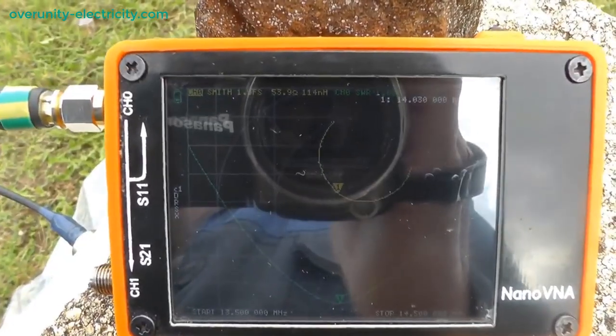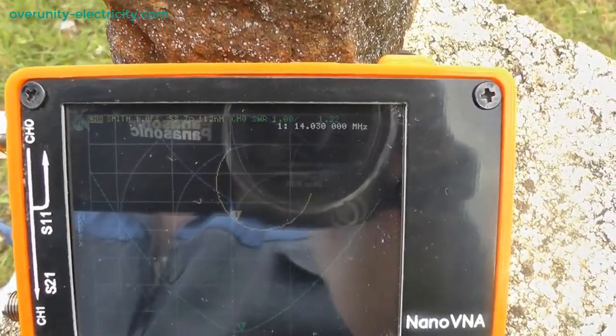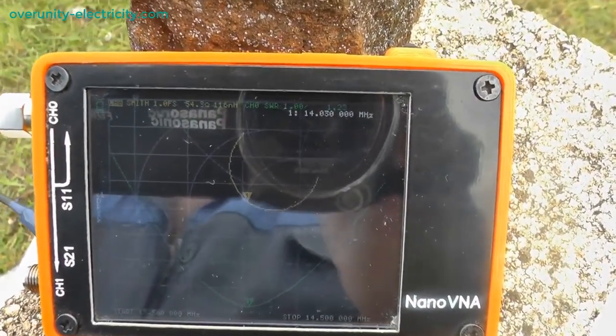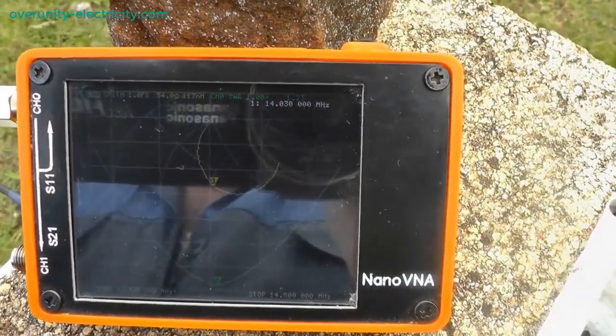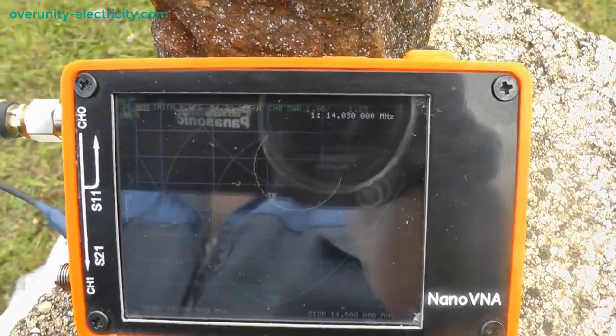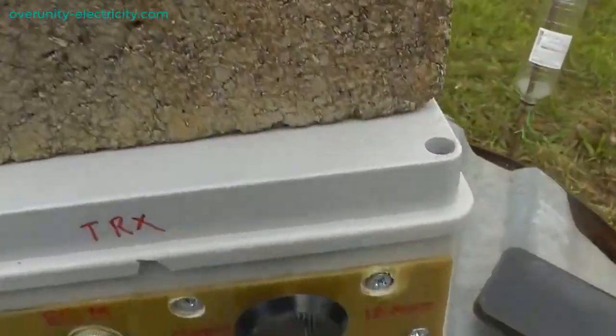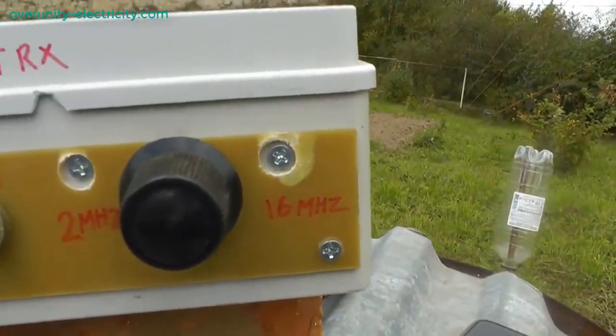This is where conventional science falls short, and where ether theory, as explored by Russell, Steinmetz, Tesla, and brought forward by Wheeler and Dollard, provides real insight. The energy here comes from field perturbations, that is, distortions in the ether, which show up as standing waves in the coils L1 and L2 and in the cylindrical ferrite core.